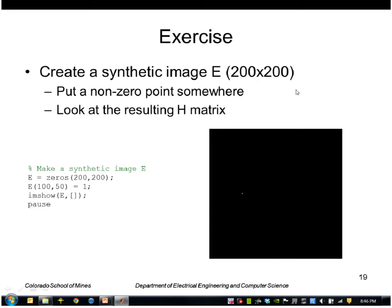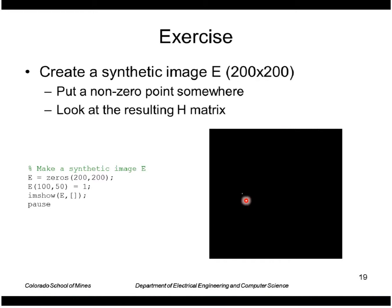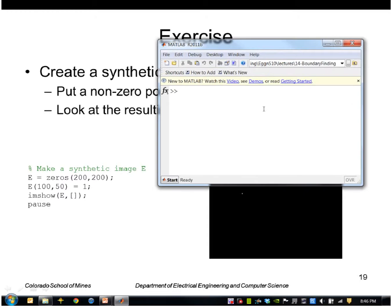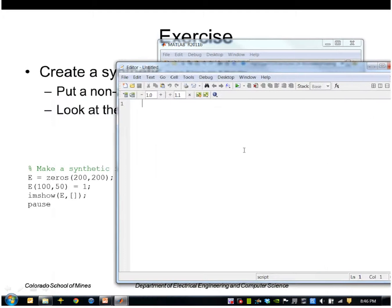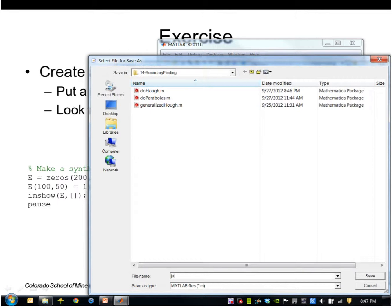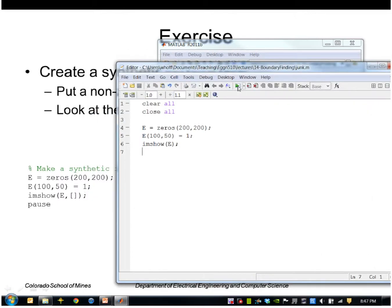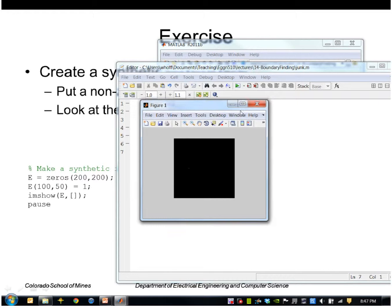So let's go ahead and try that on a synthetic image. We'll make a very simple image that's all zeros and we'll put one edge point here at location 150. I'll start a new script file. If I run that, I get this image with a single point right there.